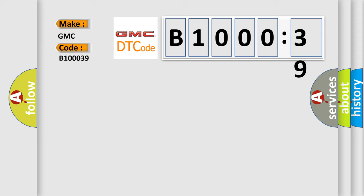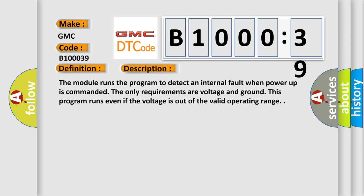The basic definition is electronic control unit performance internal electronic failure. And now this is a short description of this DTC code. The module runs the program to detect an internal fault when power-up is commanded. The only requirements are voltage and ground. This program runs even if the voltage is out of the valid operating range.